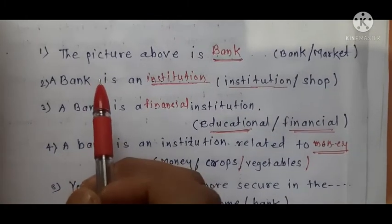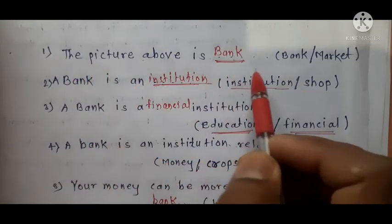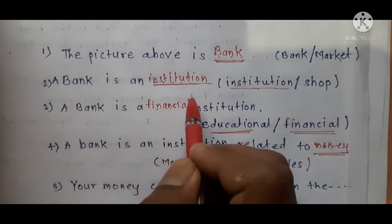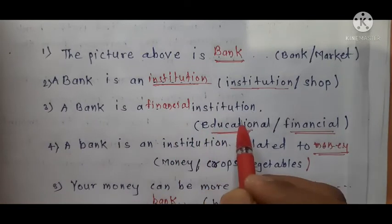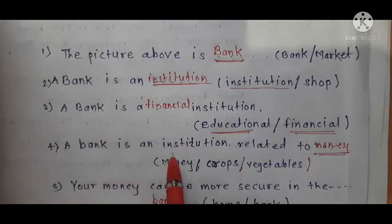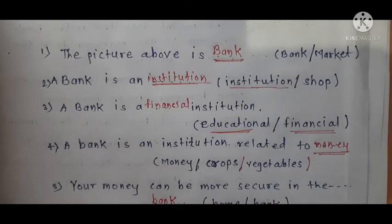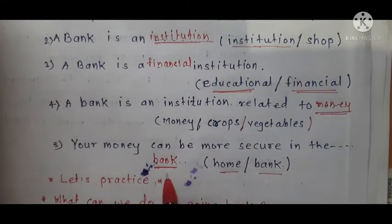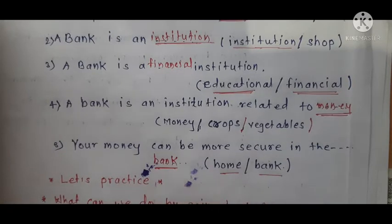Let me repeat all questions once more. The picture above is a bank. A bank is an institution. A bank is a financial institution. A bank is an institution related to money. Your money can be more secure in the bank. B-A-N-K.